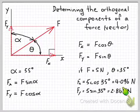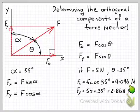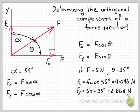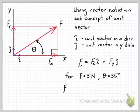Okay so previously we calculated the x component magnitude is 4.096 newtons and the y component magnitude was 2.868 so we can make use of those values in defining our vector using the vector notation.